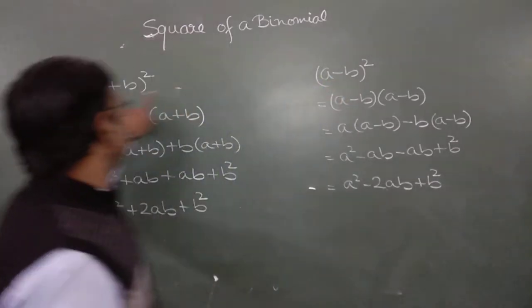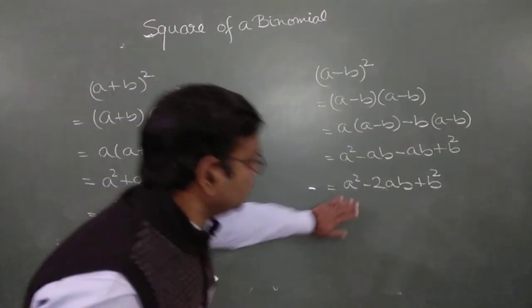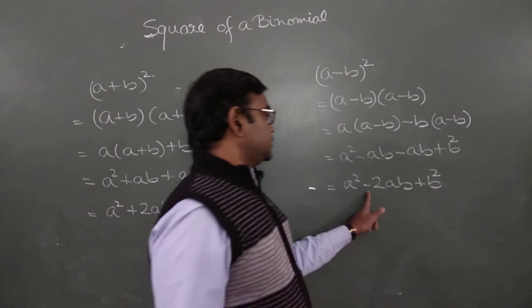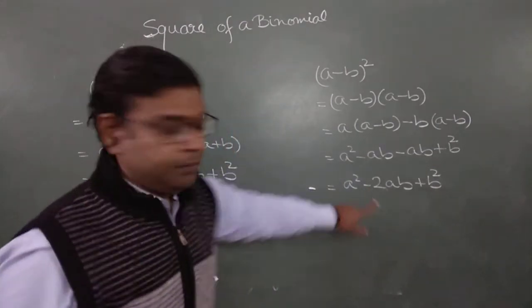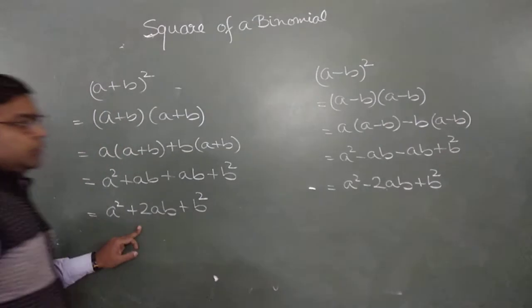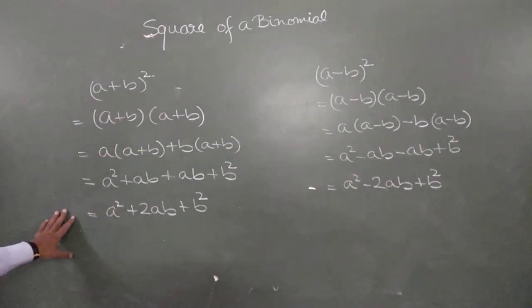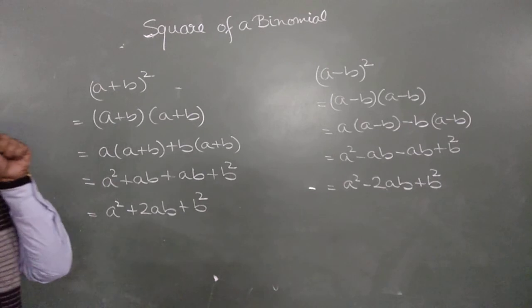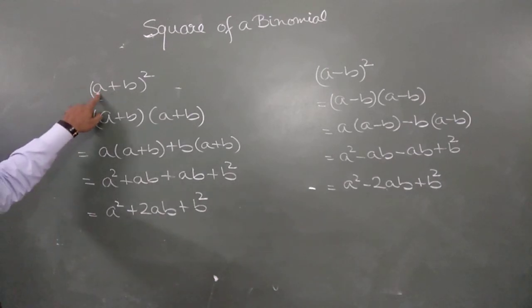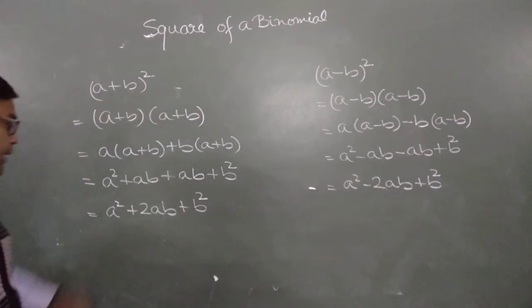See, both concepts have almost the same terms, but one term has a different sign. The first identity gives plus 2ab, and the second identity gives minus 2ab. That is the only difference between the two identities.